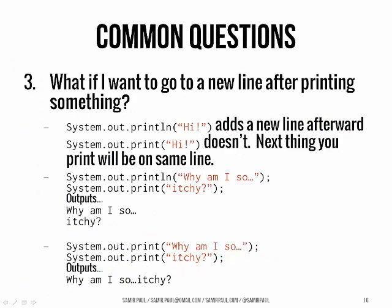Maybe we want to print a second line of code — it's really easy to do in Java. We used println, that's System.out.println, and that adds a new line afterwards so the next thing you print is on the next line. If you didn't want to add a new line — if you wanted the next thing you print to be on the same line — you just do System.out.print. For example, println("Why am I so") then println("itchy?") — that print line adds a new line and you end up with two separate lines. Whereas System.out.print("Why am I so") followed by System.out.print("itchy?") — with no println — you end up with everything on the same line.